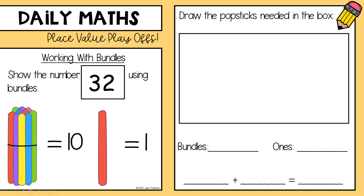Over here I have got a group of 10 lollipop sticks. I would like you, on a piece of paper, to draw using lollipop sticks the number 32. So how many groups of 10 would you draw, and how many extra ones?